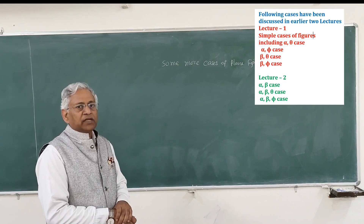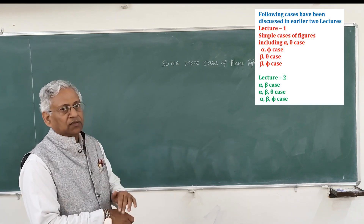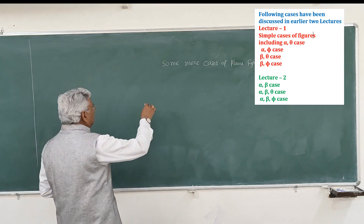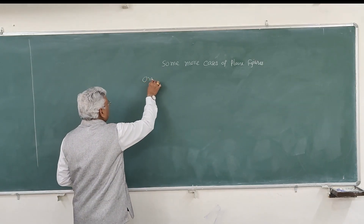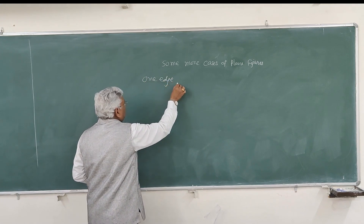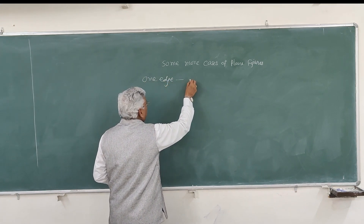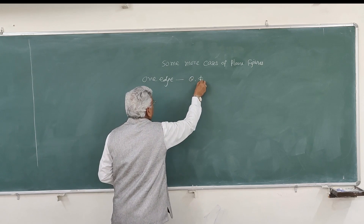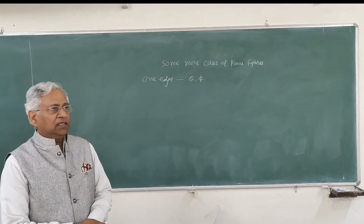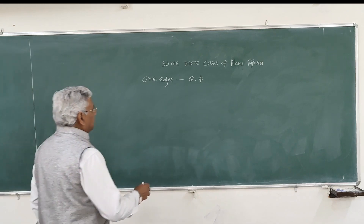Now there are two more cases I would like to discuss in this session. The first is when one edge is inclined to HP at angle theta and to VP at angle phi. This is called the theta-5 case.